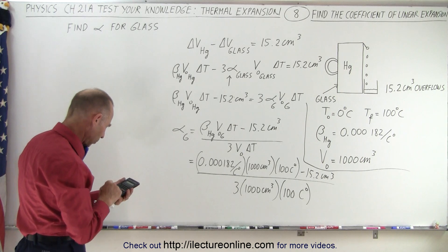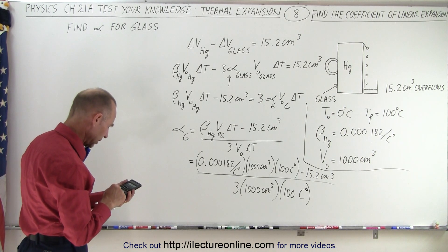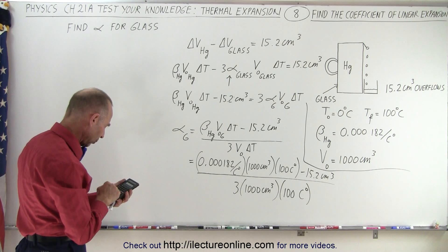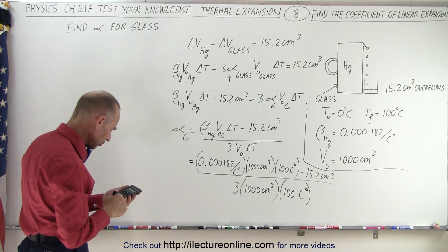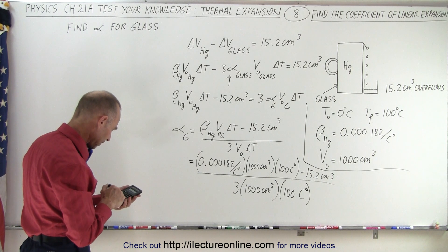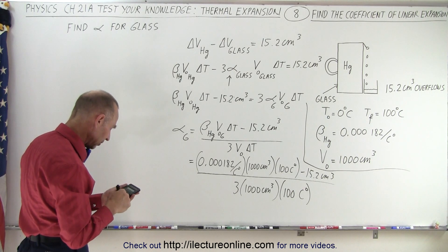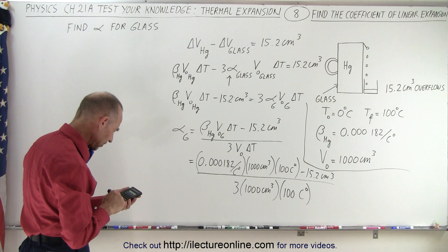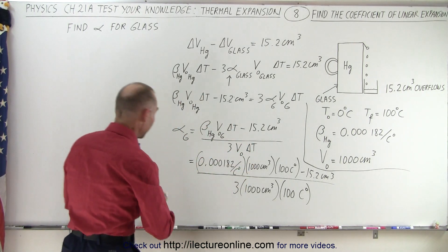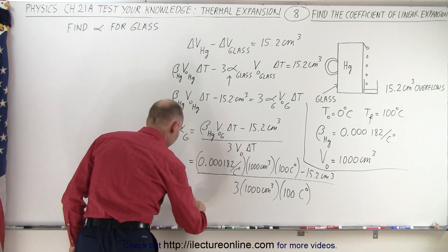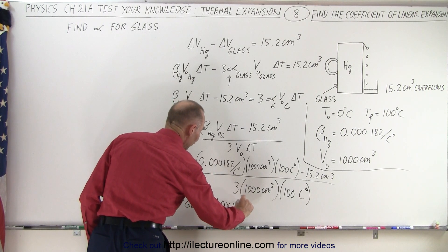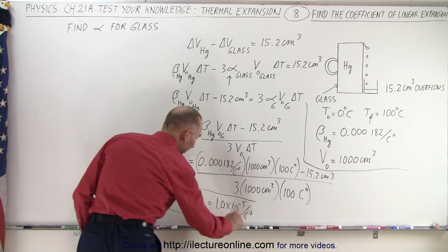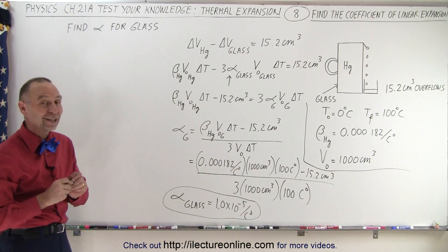Plugging in: 0.000182 times 1,000 times 100 gives 18.2. Subtracting 15.2 gives 3. Dividing by 3 gives 1, then dividing by 1,000 and by 100 — that is dividing by 10 to the 5th — gives the result. The linear coefficient of expansion for glass turns out to be 1.0 times 10 to the minus 5 per centigrade degree, at least for the glass in this problem. And that is how it's done.